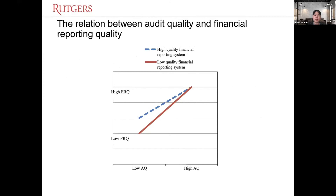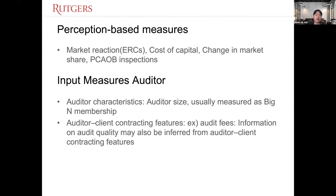This is a demonstration of the relationship between audit quality and earnings quality. As we can see in the graph, there's a positive linear relationship between them. We also have perception-based measures of audit quality: market reaction, earnings response coefficient, and we can use the cost of capital or changes in market metrics. PCAOB inspection is also perception-based — how we perceive the audit quality.